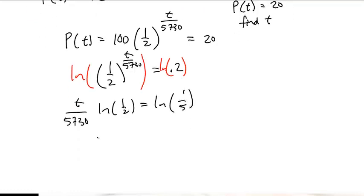Multiply everything over, and t = ln(1/5) / ln(1/2) × 5,730.